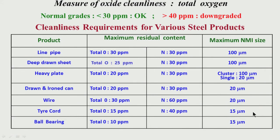As we go to more and more stringent applications, residual contents become more and more restricted and maximum limits are still lower. For ball bearing steel, the oxygen requirement is total oxygen 10 ppm — that means dissolved as well as oxygen in the form of oxides — which is just 10 ppm, and inclusion size 15 microns. These instances throw light on how, for different applications, different residual contents and inclusion sizes are restricted.